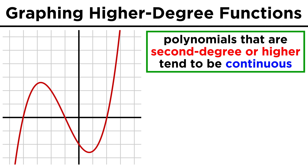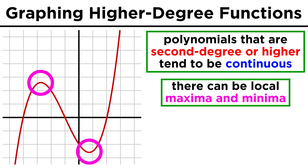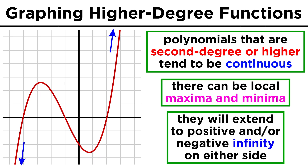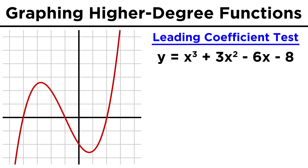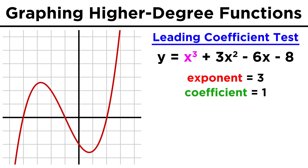First, we must realize that polynomial functions with a degree of two or higher are smooth and continuous. They can have hills and valleys in the middle, but on either side, they tend to go towards positive or negative infinity. There are several possibilities for the end behavior of polynomial functions, which means what it does as X goes to positive or negative infinity. We can figure out end behavior using the leading coefficient test — we look at the leading term, or the term with the largest exponent, and examine its exponent and coefficient.